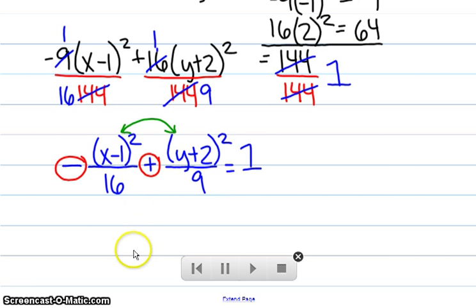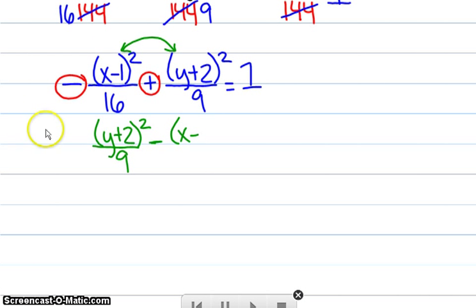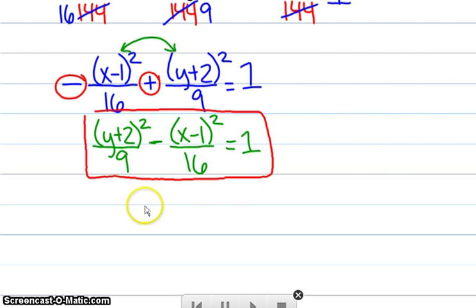When I do, it should look like this. Our (y plus 2) squared over 9 is going to go in the front with its plus sign. Then my (x minus 1) squared over 16 gets put behind it with the minus sign right there, equal to 1. Now that I have it like this, I can go through and grab my hyperbola.